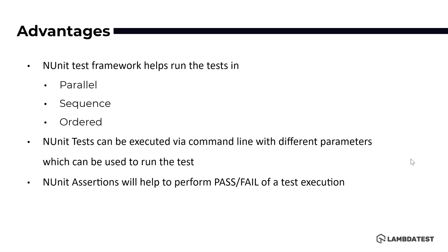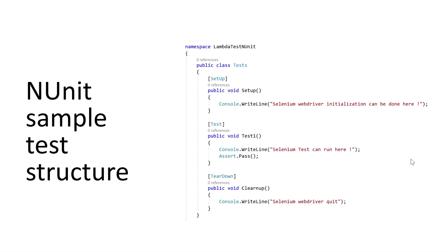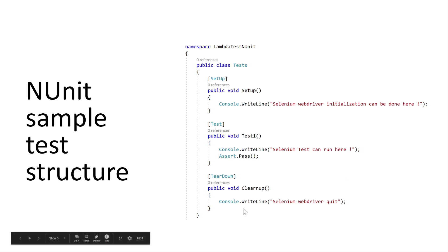The NUnit sample test structure looks something like this. It has a class decorated as a TestFixture, and it has a Setup method. Within the Setup method we mostly set up things like the Selenium WebDriver to invoke a browser, a database connection, or opening a file. Similarly, there is a TearDown method that performs cleanup — closing the Selenium WebDriver, disconnecting the database, or closing files.